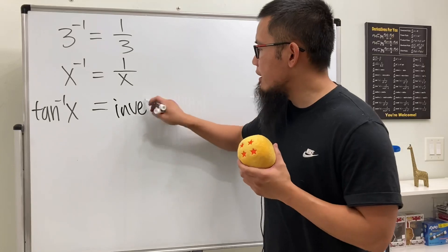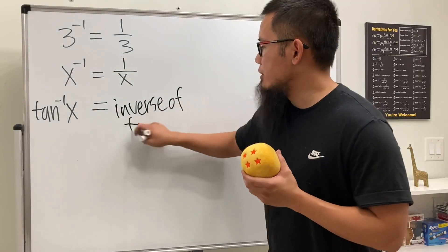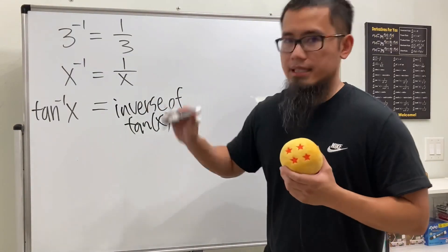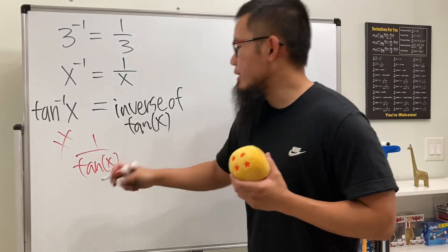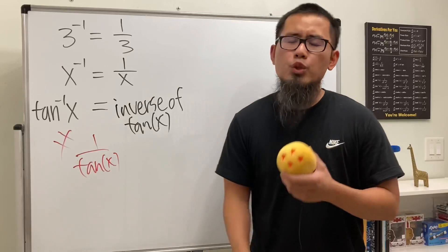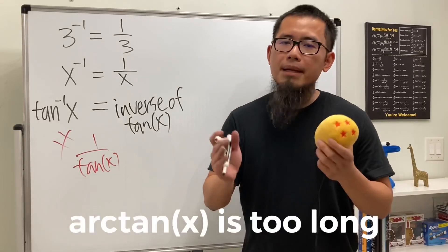This right here is actually the inverse of tangent x. This is not the same as 1 over tangent x. I know this is crazy, nobody likes this notation, which is why we'll be using the arctangent notation, right? But that's actually too long.